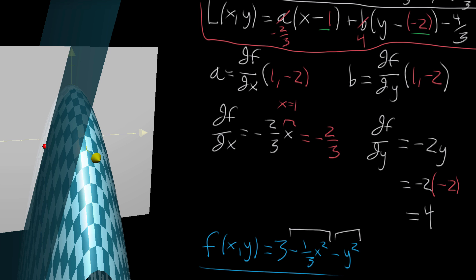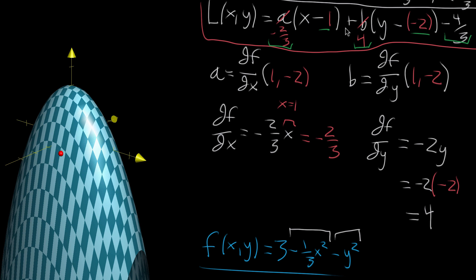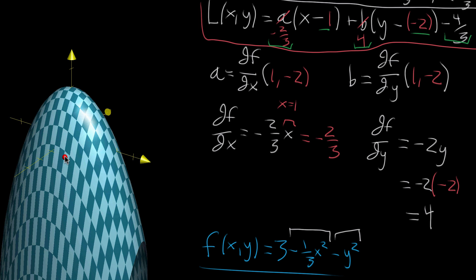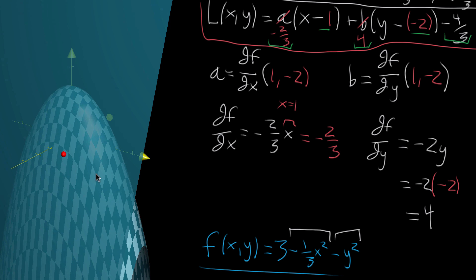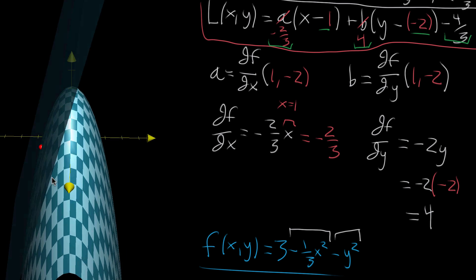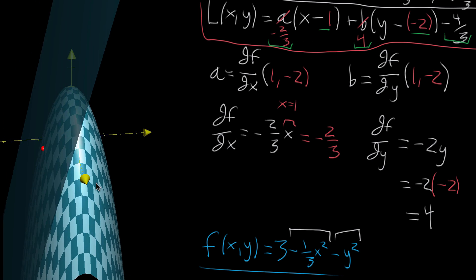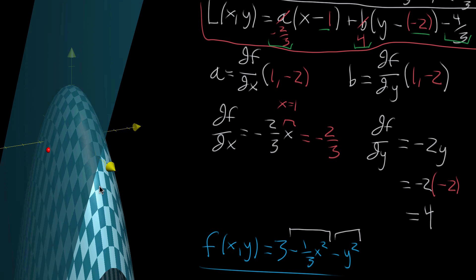This could seem like a lot at first, since we had to specify the input point (1, −2), evaluate the function there, and compute both partial derivatives. But there's not actually a lot to remember. Looking at the graph makes things more reasonable because each term has actual meaning: the input coordinates (1, −2) give us the x and y location; evaluating f tells us the z-coordinate on the graph; and the two partial derivatives specify the orientation. Once you think of it geometrically, each of the five numbers feels obviously necessary to pin down the tangent plane.